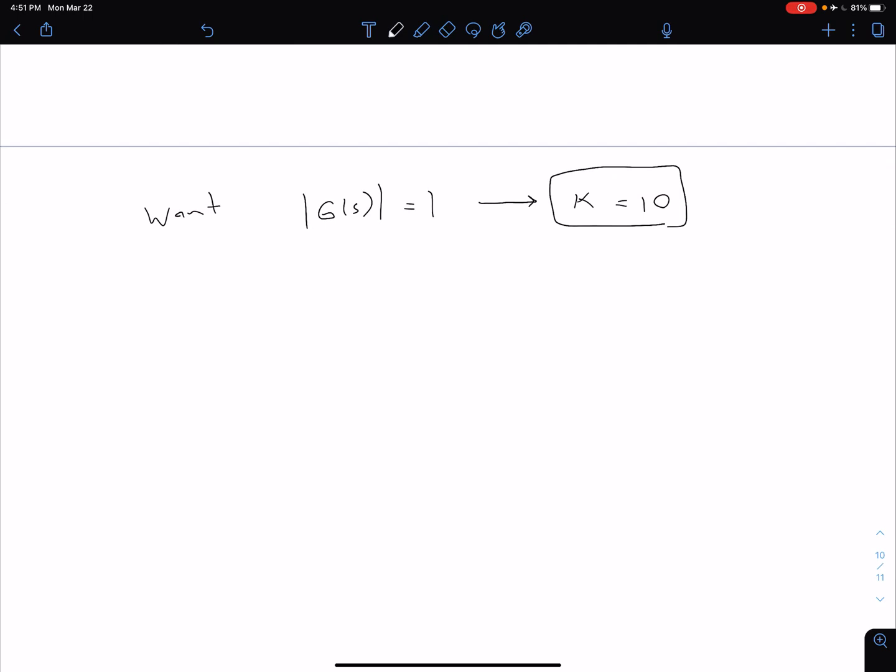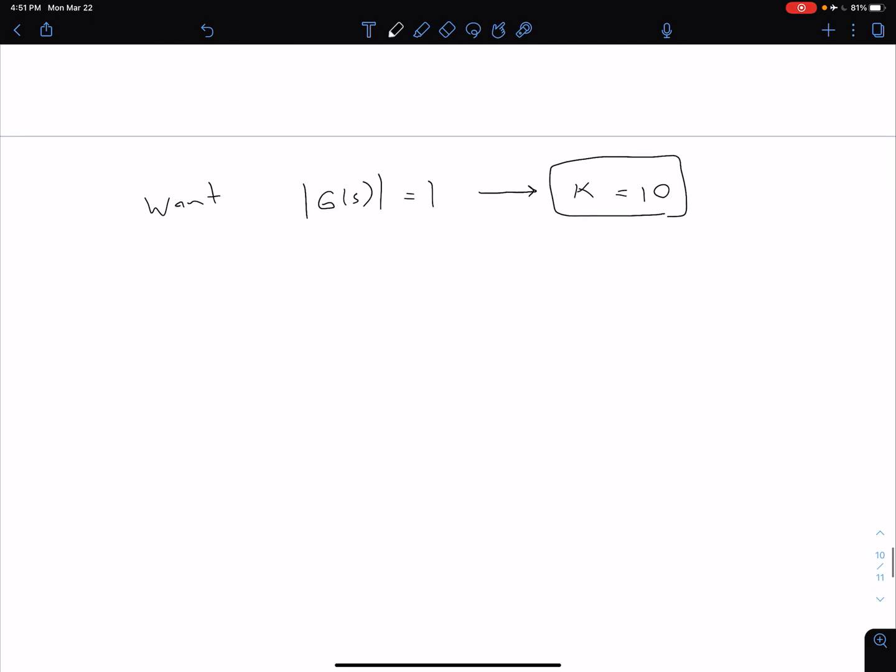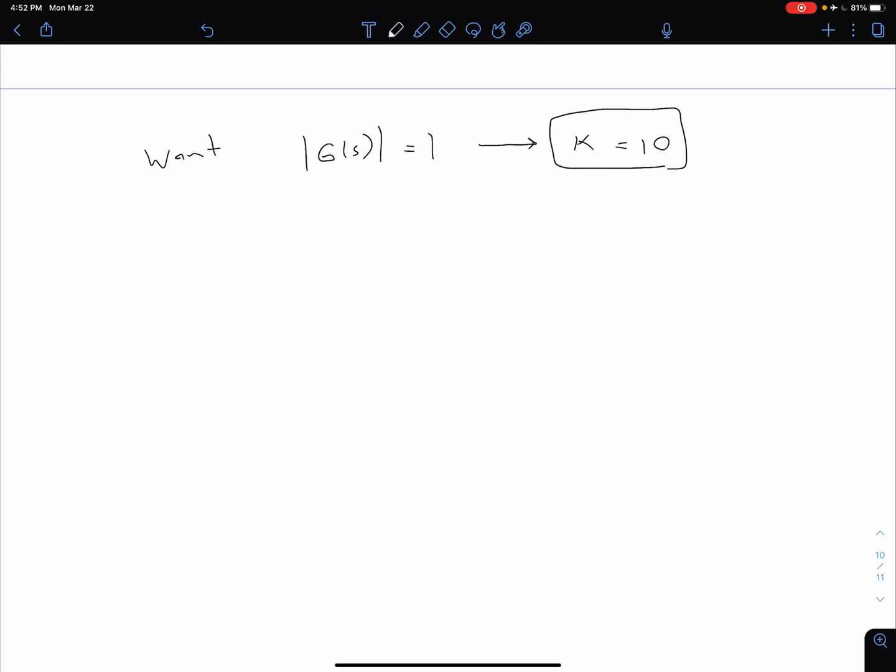A quick note on the notation: if we wanted to match the notation from the previous video, we would have started with G(s) and K separate. We would have G(s) = (s+2) / (s² + 4s + 13) and K = K.